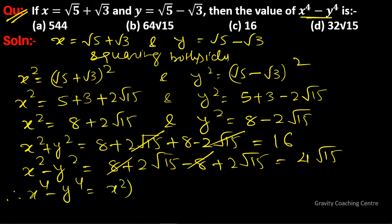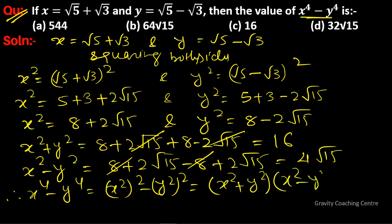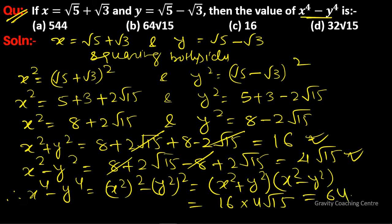Therefore, x to the power 4 minus y to the power 4 equals (x squared) squared minus (y squared) squared, which factors as (x squared plus y squared) times (x squared minus y squared). Substituting: 16 times 4 root 15, so option B is the correct answer.